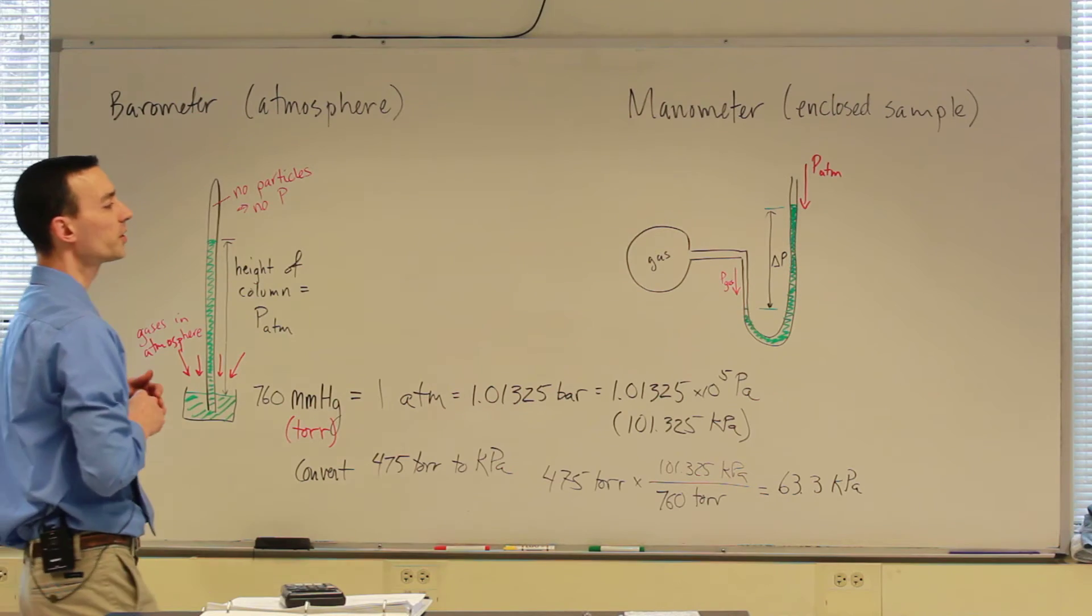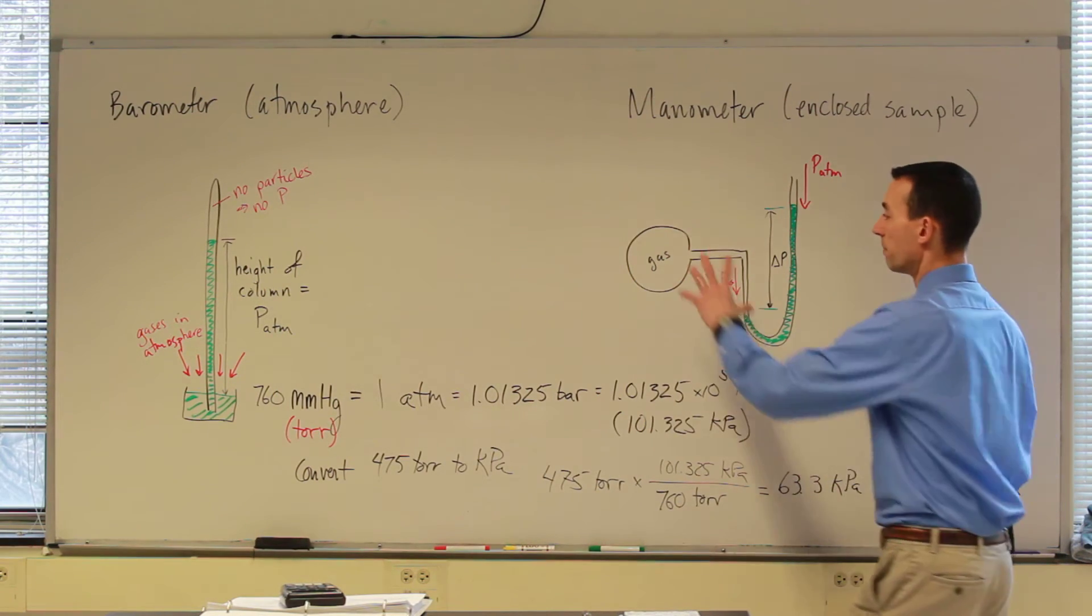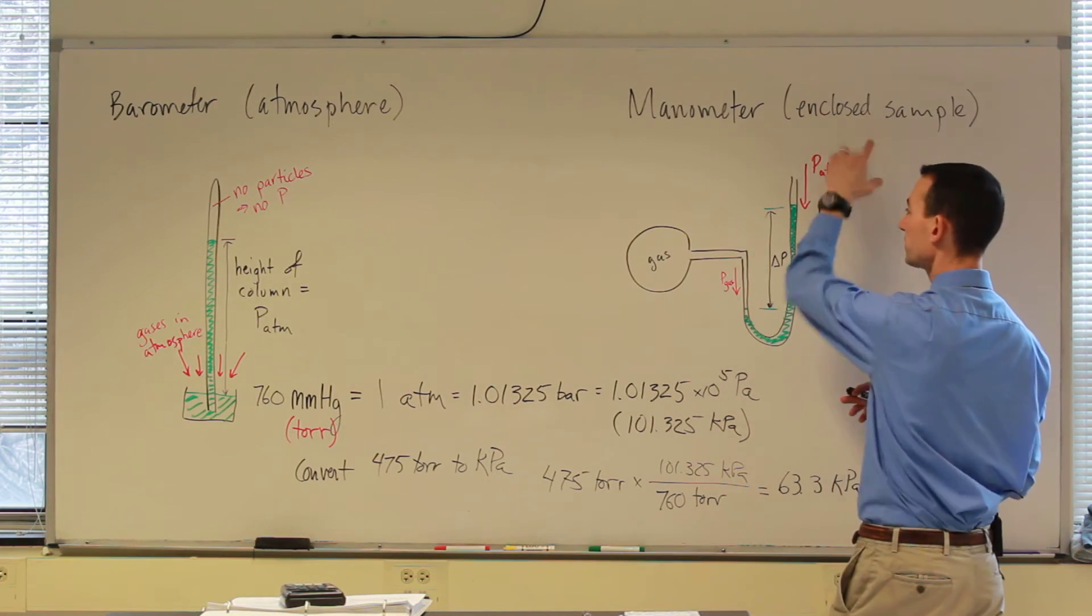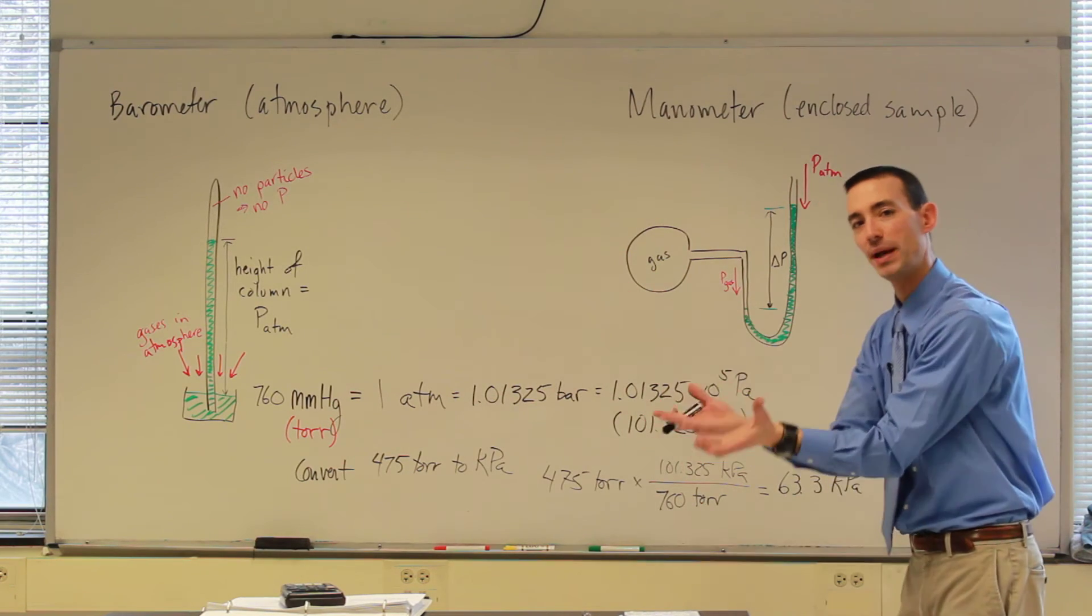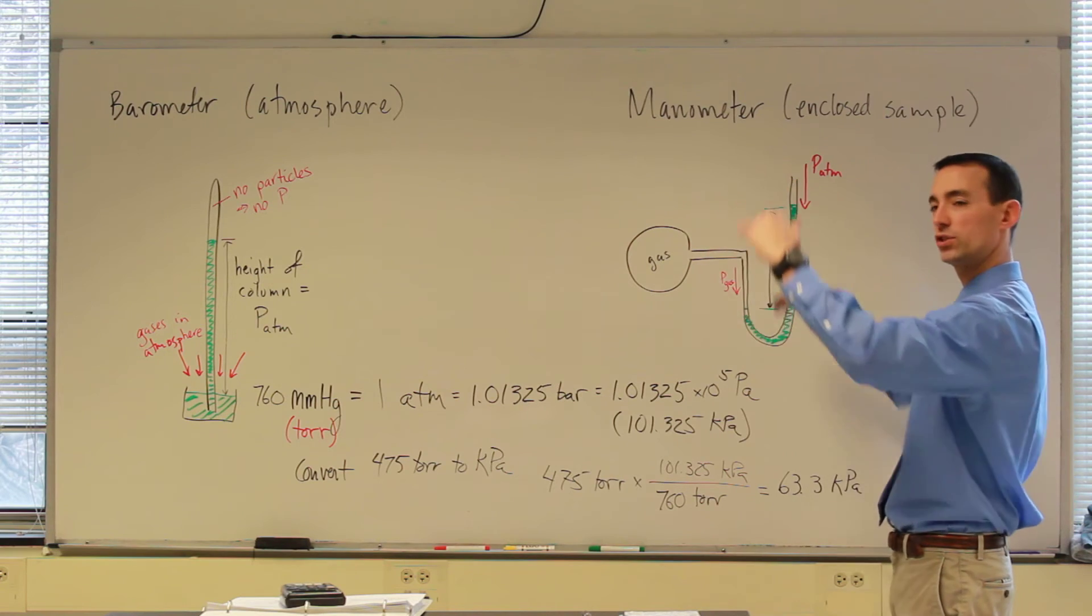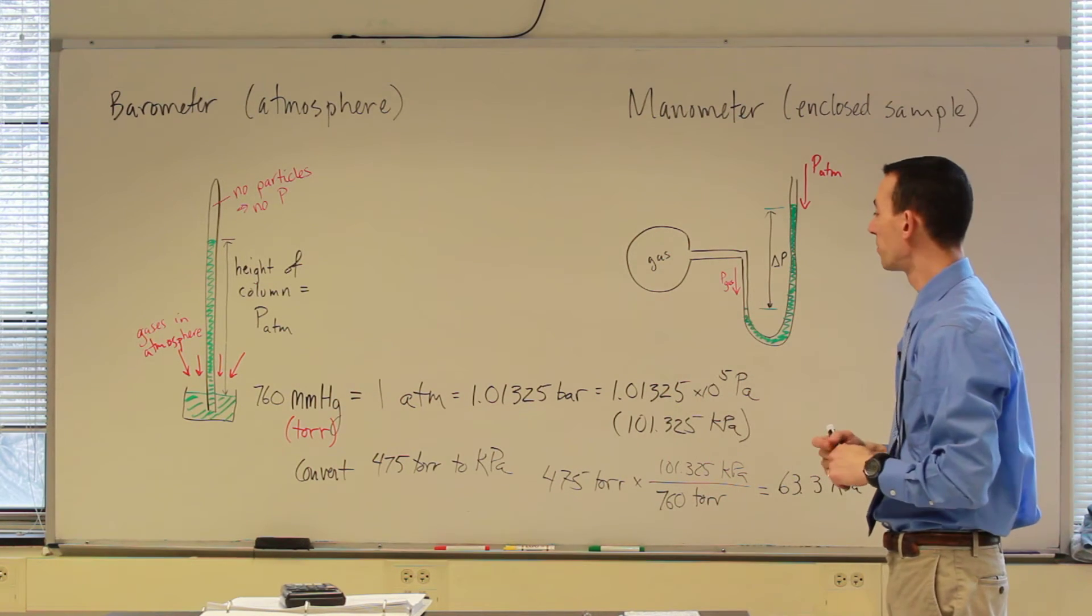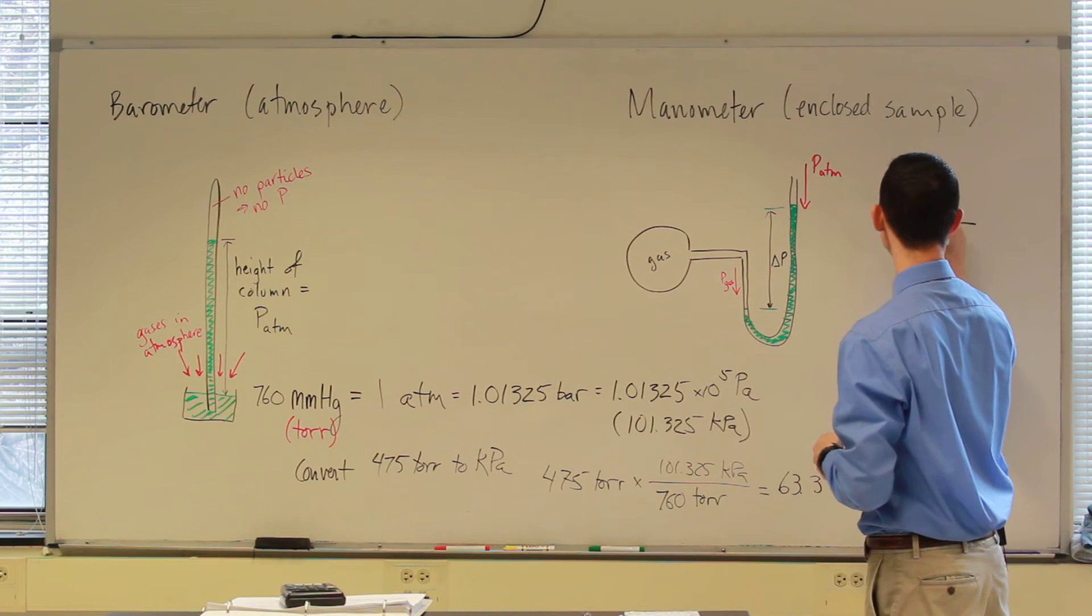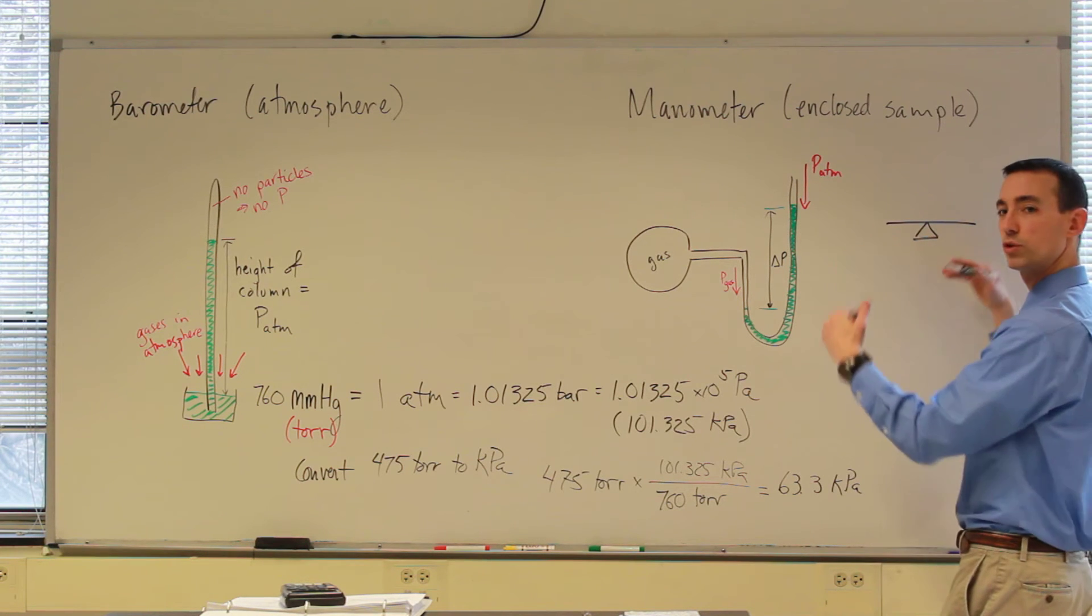So the other unit of measuring gas pressures is the manometer. The manometer measures the pressure of a gas relative to the pressure of the atmosphere. We take that tube, essentially, and it gets bent into the shape of a U. And so the liquid in the tube, still mercury, fluctuates depending on the pressure applied to each side. To me, it's a lot like a seesaw.